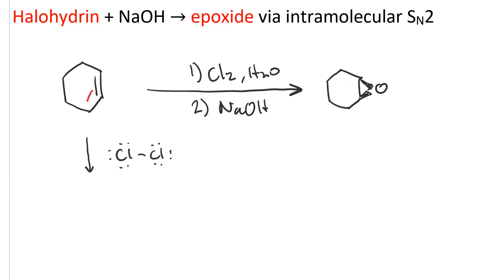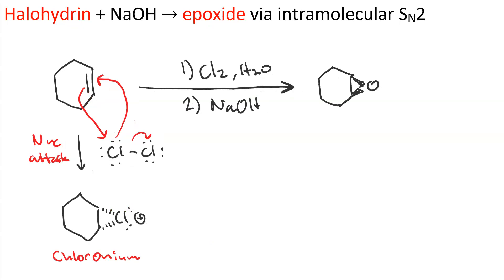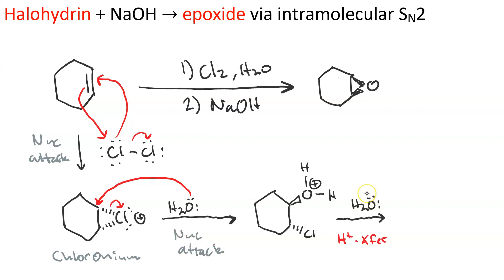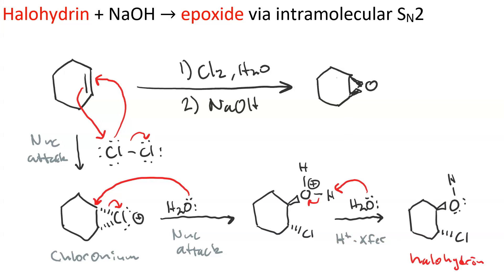In the first step, the pi bond of the alkene attacks the chlorine, and we get loss of a leaving group and back attack. The cyclic three-membered cation, the halonium ion — in this case chloronium — is identical to the intermediate we get when doing a halogenation addition reaction. In the second step, water acts as a nucleophile and attacks one of the ring carbons, opening the ring, and now we have our protonated halohydrin. Water then deprotonates that to give our neutral halohydrin.